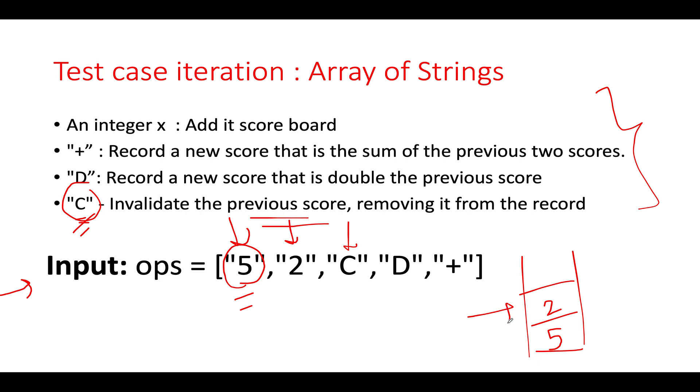As soon as you see C, what do you have to do? You have to remove the previously added score. So this is gone. Let's proceed ahead.